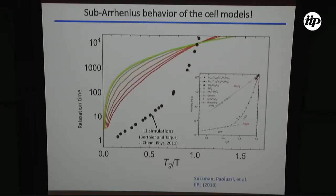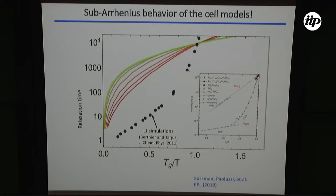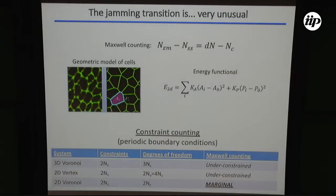Looking more carefully at the details, these models are actually quite unusual. Plotting a log-scale measure of dynamics as a function of inverse temperature, every particulate glass-former ever studied shows exponential or faster-than-exponential growth. In contrast, these disordered cellular models show a distinctly sub-Arrhenius, or sub-exponential, scaling of the relaxation time. The rate at which these models slow down is itself much slower than you would expect based on analogies to glassy systems drawn in the past.